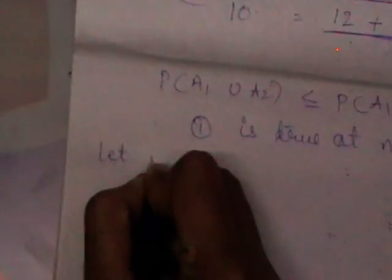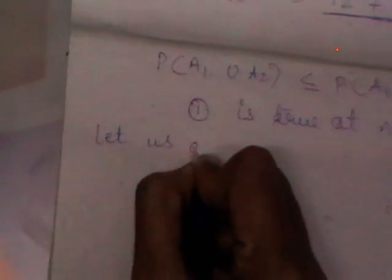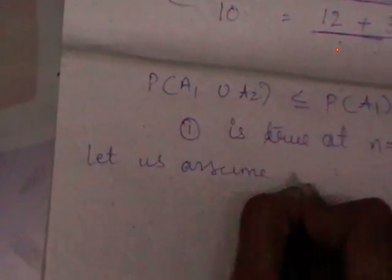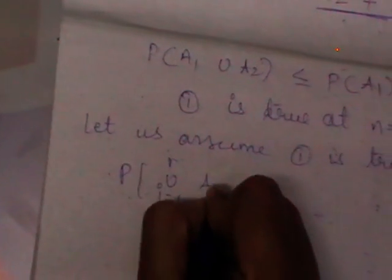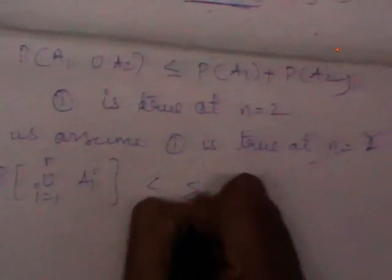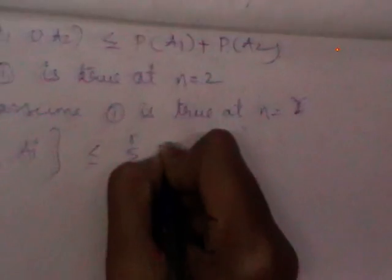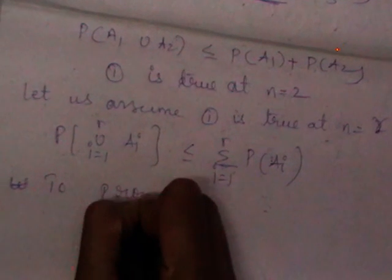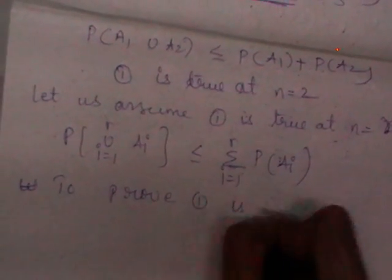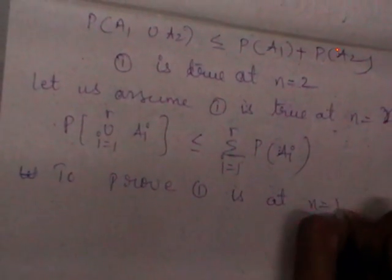The next step: let us assume equation 1 is true at n equals r. That means probability of union i equals 1 to r of A_i, less than or equal to sigma i equals 1 to r of P(A_i). We are assuming it is true at n equals r. Then we need to prove equation 1 is true at n equals r plus 1.